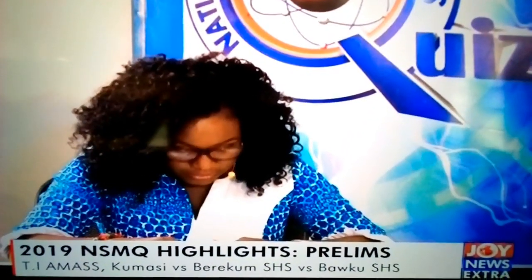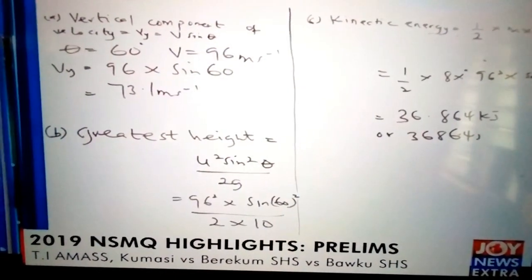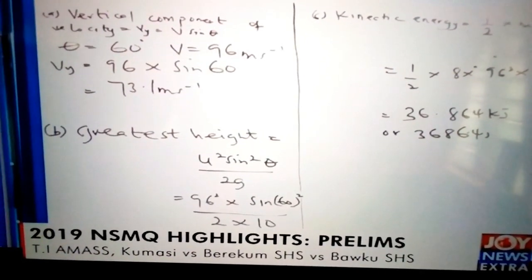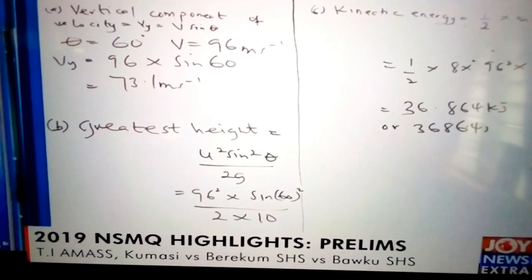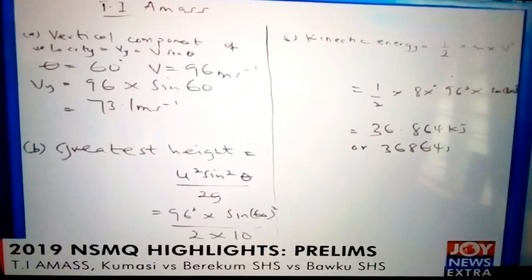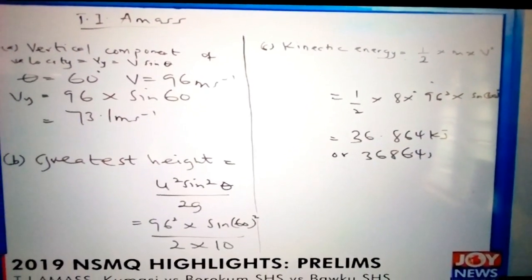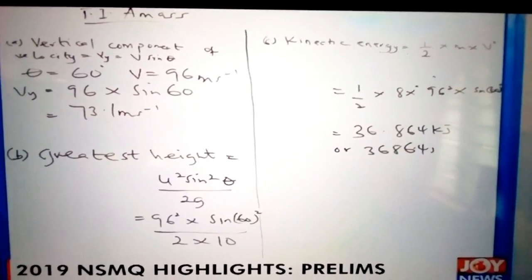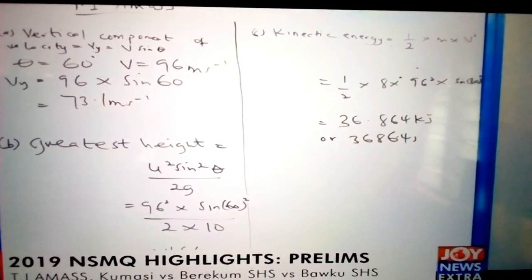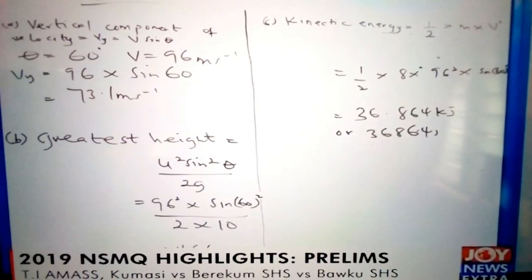TIA Mask — for the vertical components, they gave that as D sin θ, i.e., 96 sin θ. The answer was 73.1 instead of 83. For their effort at the calculation and putting in the values, I give them 2 marks. To determine the greatest height, they also put in the values and came to 245.6, which is far from the expected answer — they lose all points on that. However, for Part C they wrote out everything, put the right values in the formula, and arrived at 36,864. They have 3 marks there, giving TIA Mask 5 marks total.